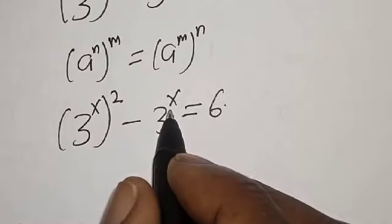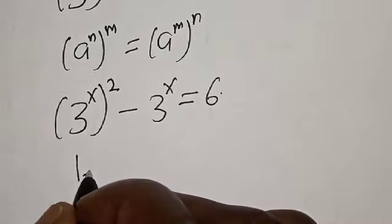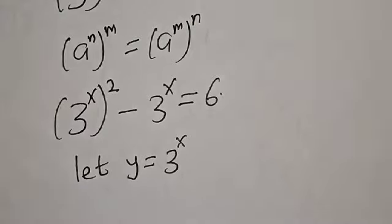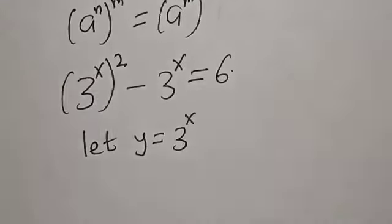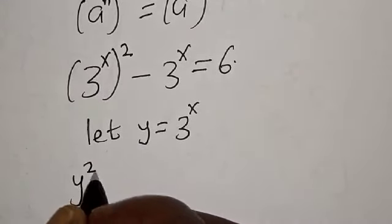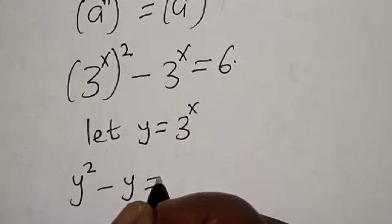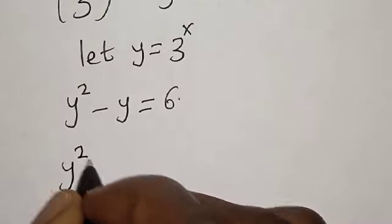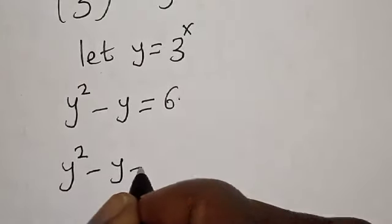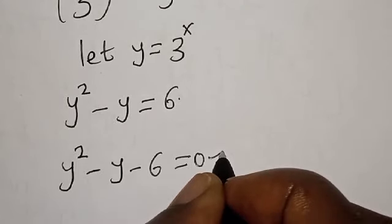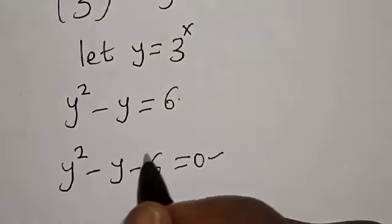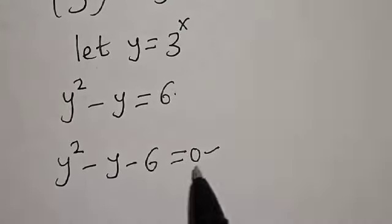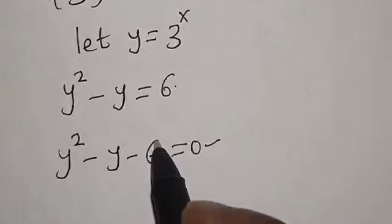We have 3 raised to power 2x and 3 raised to power x here. Let y equal 3 raised to power x. Then y squared minus y is equal to 6, which gives y squared minus y minus 6 is equal to 0. This is a quadratic equation which can be solved by using either the quadratic formula or factorization method. In this case, we are going to use the factorization method.